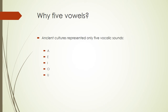Why five vowels? Ancient cultures represented only five vocalic sounds — A, E, I, O, and U — which are very loud points of the mouth where you can produce the loudest sounds. By using these sounds, they ensured loudness. Some English people say Italian or Spanish is a loud language, but it is loud by design. In the old world, providing a loud speech was considered more valuable.